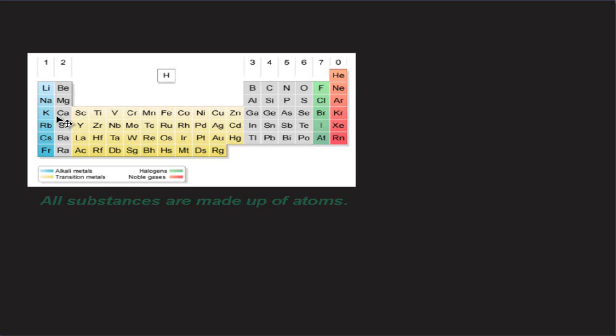Every single element has its own type of atom, so like helium would have its own atom and it would have a different structure to lithium or gold. Elements only have one type of atom.